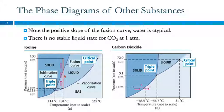Here are two other phase diagrams. This is iodine and this is carbon dioxide. Notice that these fusion curves have positive slopes. They go up as they go to the right.